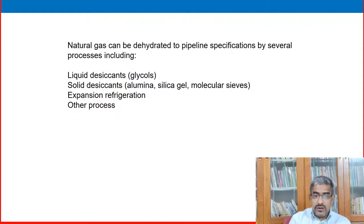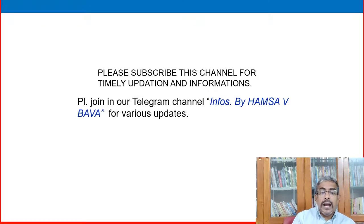Natural gas can be dehydrated to pipeline specifications by several processes including: liquid desiccant, that is the solvent we are using, glycol, which we are going to discuss in our coming videos. Solid desiccants: alumina, silica gel, molecular sieve, that we also use in various other plants. Expansion refrigeration, and other processes. These are the introduction to gas processing principles, gas processing dehydration principles. Why we do dehydration, I hope all of you understand this.